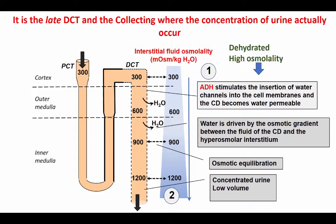The second determinant is the interstitial fluid hyperosmolality. This is critical. Even with aquaporins in place in the collecting duct and with ADH present, water will not be reabsorbed if the interstitial medullary has been washed out of solutes, as happens with chronic severe polyuria.